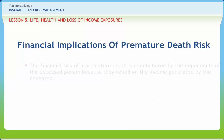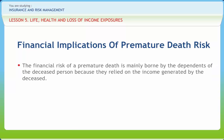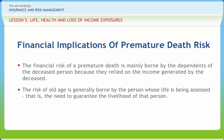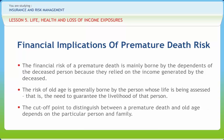The financial risk of a premature death is mainly borne by the dependents of the deceased person, because they relied on the income generated by the deceased. The risk of old age is generally borne by the person whose life is being assessed, i.e., the need to guarantee the livelihood of that person. The cut-off point to distinguish between a premature death and old age depends on the particular person and family. The distinction between different effects of mortality risk was made at the beginning of the 20th century.